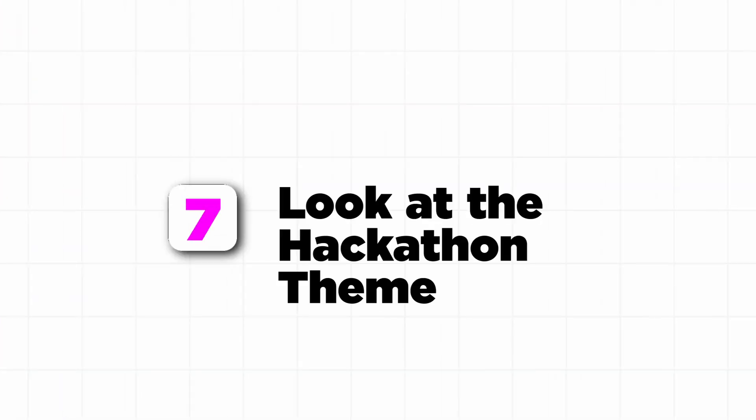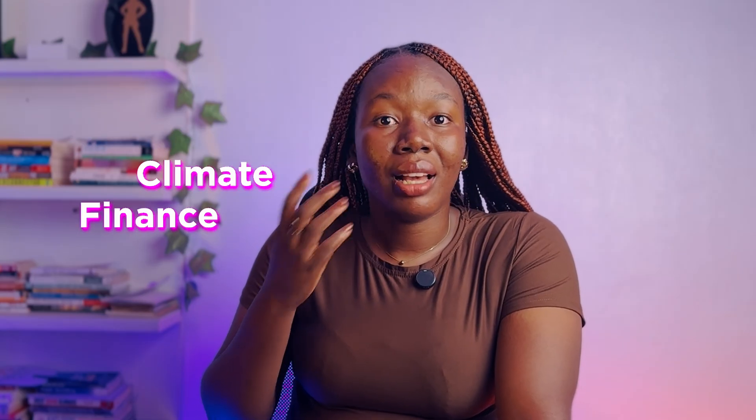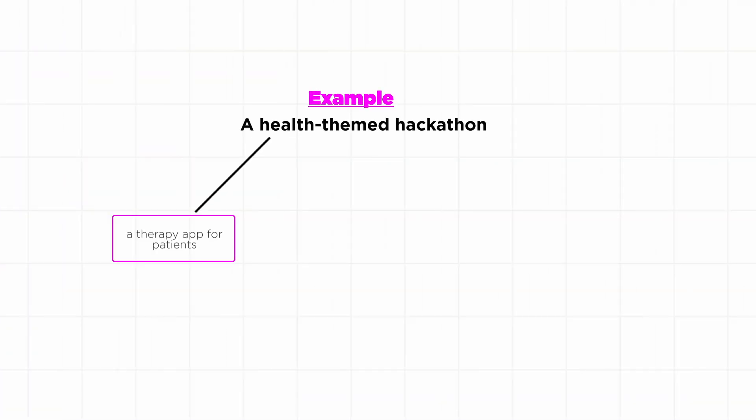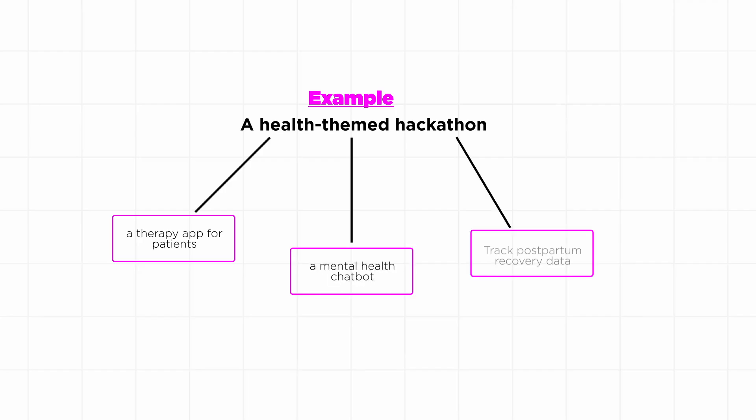Number seven: look at the hackathon's theme. Some hackathons are built around specific themes — climate, finance, health, education. Instead of guessing what to build, lean into the theme. For instance, if it's a health-related hackathon, think about building a therapy tool for patients, a mental health chatbot, or a tool that tracks postpartum recovery data. Knowing the theme lets you focus on that particular space and think around it. The theme gives you a playground — don't ignore it.